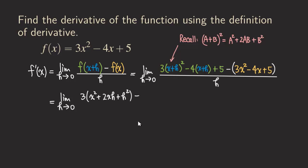For the four times x plus h, we just distribute the negative four. So we get minus four x minus four h, and then plus five. And then now distribute this negative one to all the stuff inside the parentheses, so we get minus three x squared plus four x minus five. And then there was still an h at the bottom, so just leave it for now.